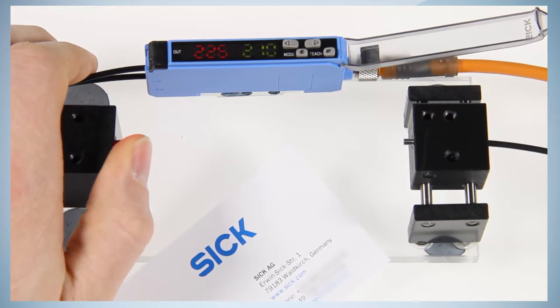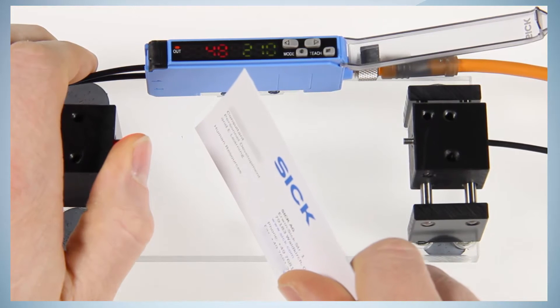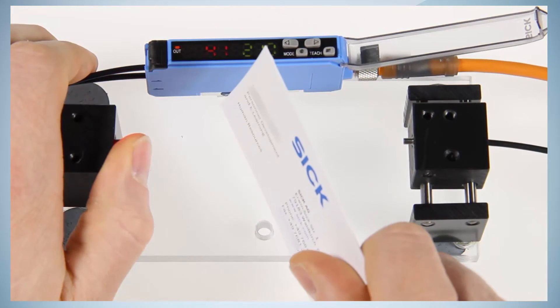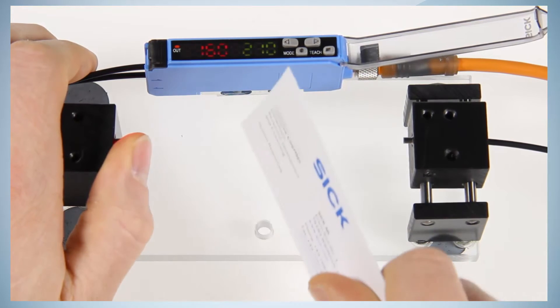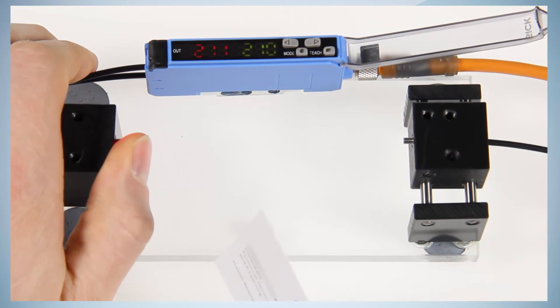Hold an object between sender and receiver fiber while your finger is still covering the sender end tip. The object is detected and the output switches. Objects can still be detected even with the contamination of your finger.